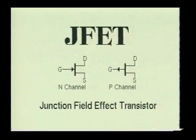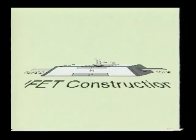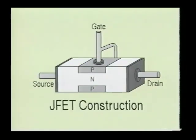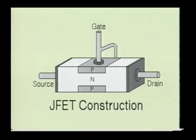Here we see the junction field effect transistor, often referred to as simply a JFET. The junction field effect transistor is constructed of a bar section of one type of semiconductor material sandwiched between two sections of the other type of material. The JFET is also a three-terminal device. It has a gate, drain, and source lead. The junction field effect transistor is a voltage-operated device, requiring virtually no input current, which gives it an extremely high input impedance.